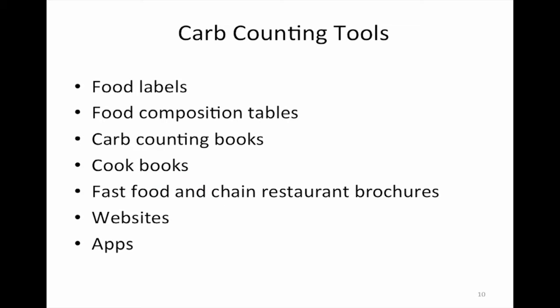The carb counting tools available include the nutrition facts labels on packaged goods, food composition carb counting lists, carb counting books, and some cookbooks that list the recipe with portion size and carbohydrate and calorie information. Fast food and chain restaurants have brochures — they don't always make them available at the counter, but you can find that information online. There are many websites for looking up food composition, as well as apps that can be downloaded to your phone.